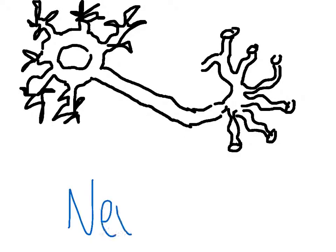Alright, so here we have our basic neuron, and today we're going to discuss the various parts of this neuron and how those parts help the neuron do what it does.